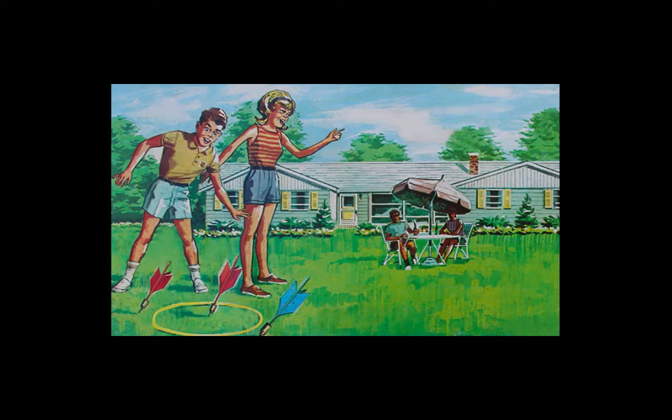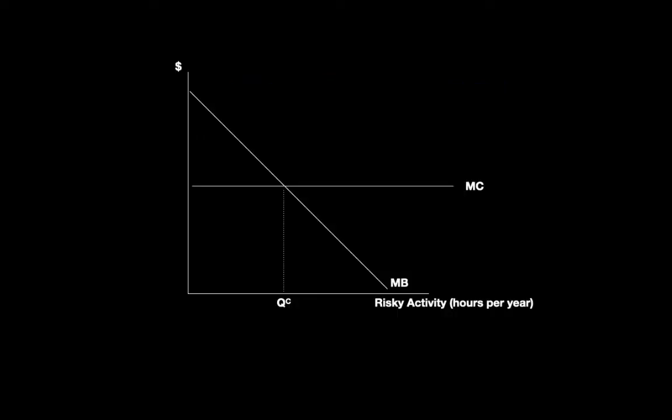Similarly, when it comes to policy and law, many steps to improve safety may have costs that outweigh the benefits. We can use a familiar graph to model the optimal amount of risky behavior. Let's suppose we are talking about lawn darts. Each hour you play, you incur an expected cost due to the danger of the game. Your private costs are represented by the marginal cost curve labeled MC. The marginal benefit curve shows the marginal benefit you get from playing lawn darts. The more you play, the less marginal benefit you get from an additional hour. You will choose QC as the optimal amount of time you play.